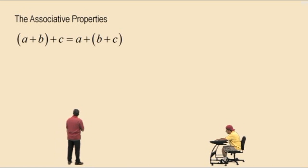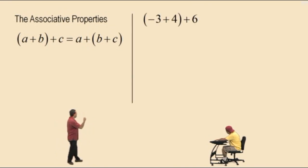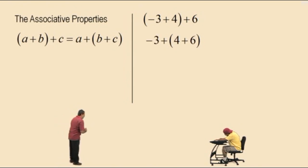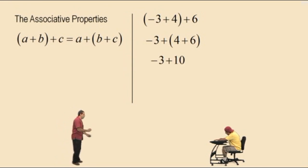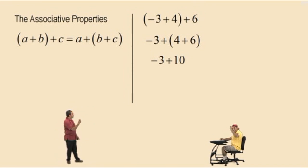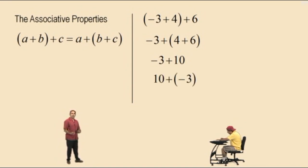Let's go to the associative properties. For addition, the quantity a plus b plus c is equal to a plus the quantity b plus c. Example: negative 3 plus 4 plus 6 — notice the parentheses around negative 3 plus 4, but we can move the parentheses around the 4 plus 6 by applying the associative property for addition. 4 plus 6 is 10, and negative 3 plus 10 is 7. By the commutative property, 10 plus negative 3 is the same as 10 subtract 3, which is also 7.